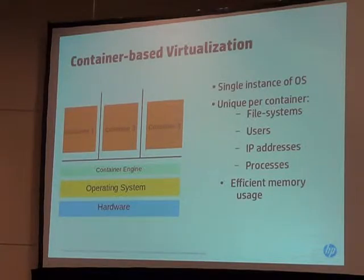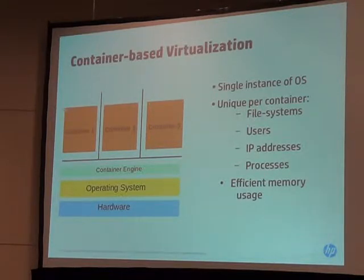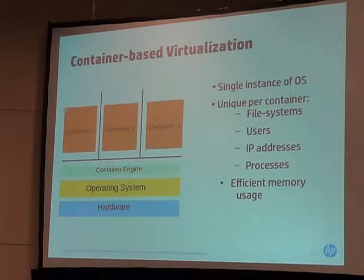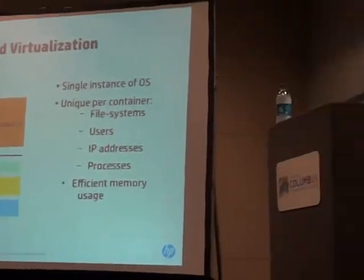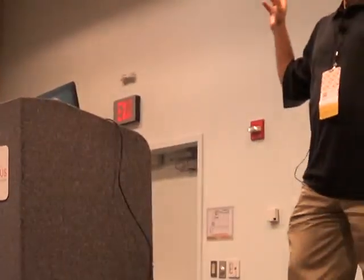Each container is isolated — if you look at process number 10 on container 1, it'll be a different process than process number 10 on container 2. The namespaces are separated across the containers. Containers are efficient for memory usage mainly because we've gotten rid of having an operating system per workload, like we had in the virtualization scenario. There's only a single instance of the operating system, so all the resources the OS was consuming are now available for the workloads to actually use.